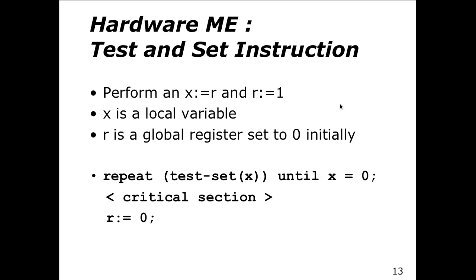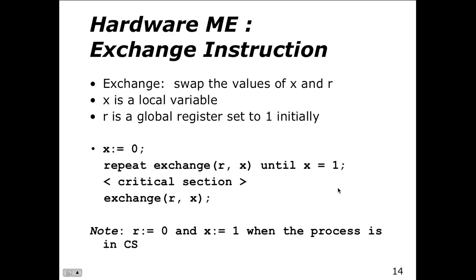From a hardware perspective, we could use a test-and-set instruction. We check a local variable X — the global register — initially set to 0, then flip it 0 to 1 to 0, or test and set, then exchange. We swap the value of X and R to do basically the same thing as a mutex. We hold a value in a variable that's either on or off, either allowing or not allowing the instruction.